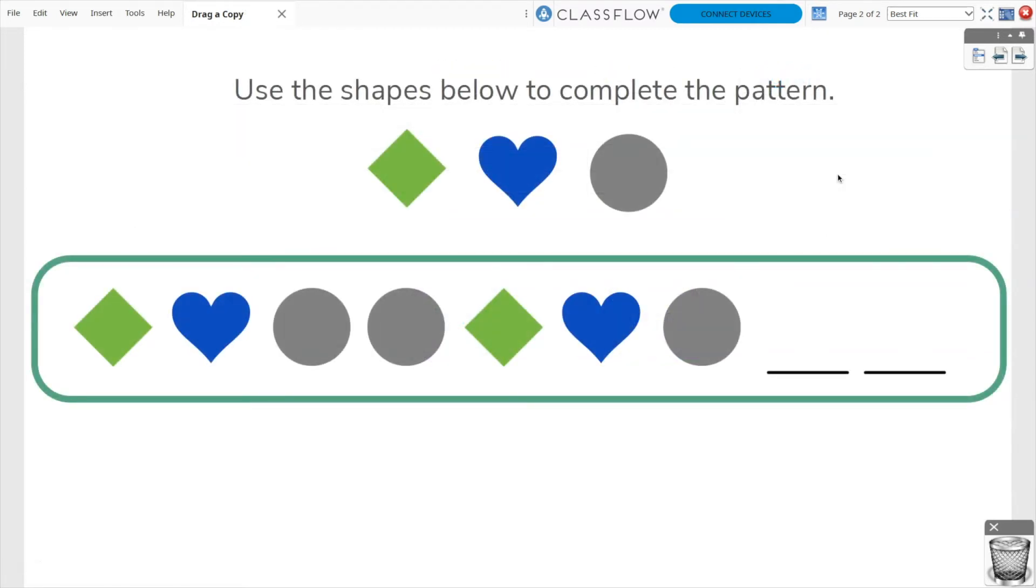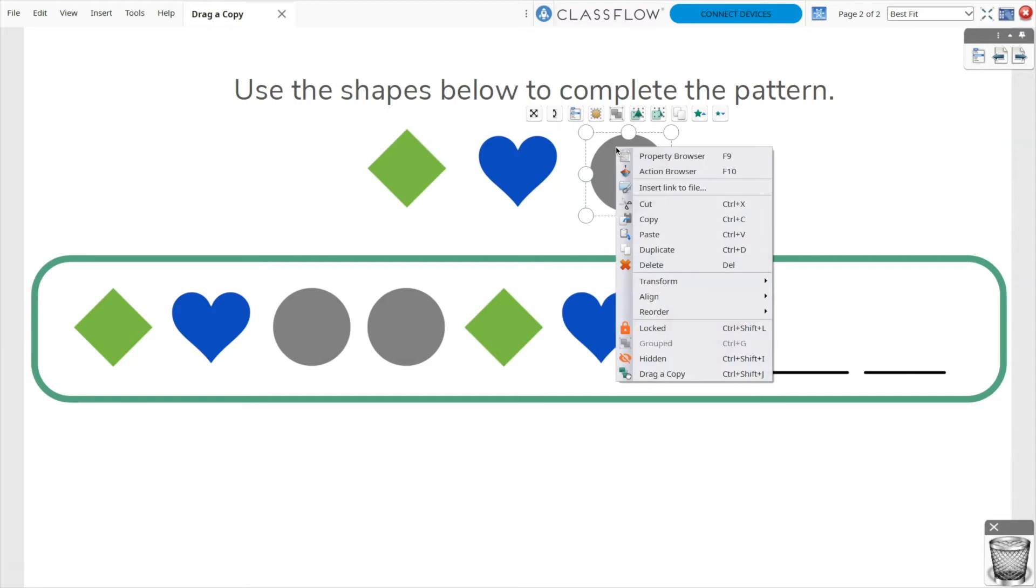To apply Drag a Copy, select an object and right-click. Choose Drag a Copy from the menu.